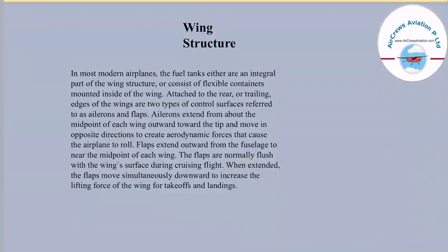In most modern planes, fuel tanks are either an integral part of the wing structure or consist of flexible containers mounted inside the wing. Attached to the rear or trailing edges of the wings are two types of control surfaces: ailerons and flaps. Ailerons extend from about the midpoint of each wing outward toward the tip and move in opposite directions to create aerodynamic forces that cause the airplane to roll. Flaps extend from the fuselage to near the midpoint of each wing and are normally flush with the wing surface during cruise flight.